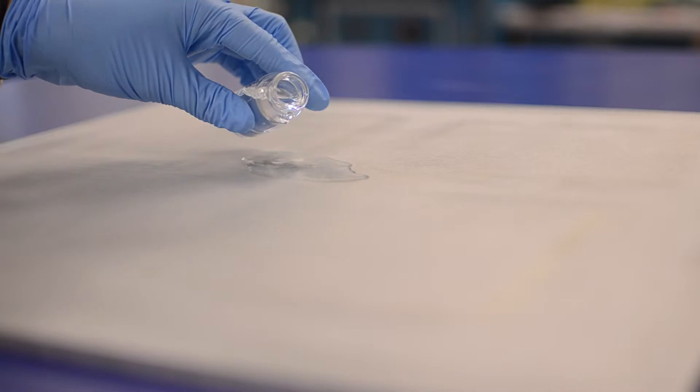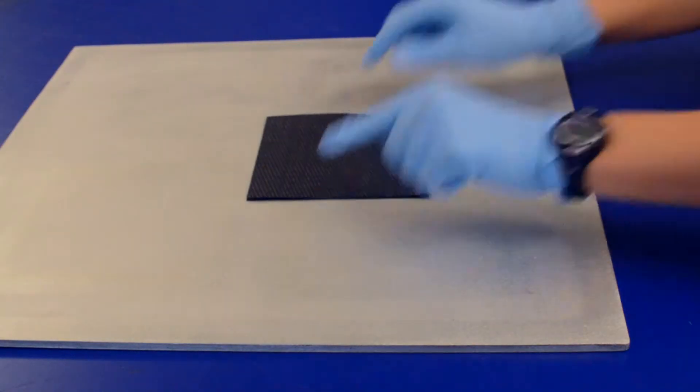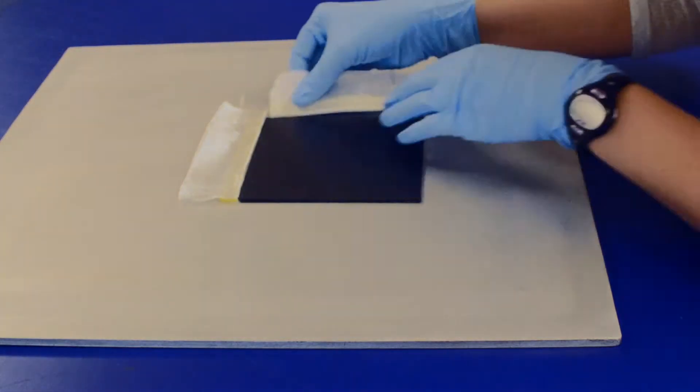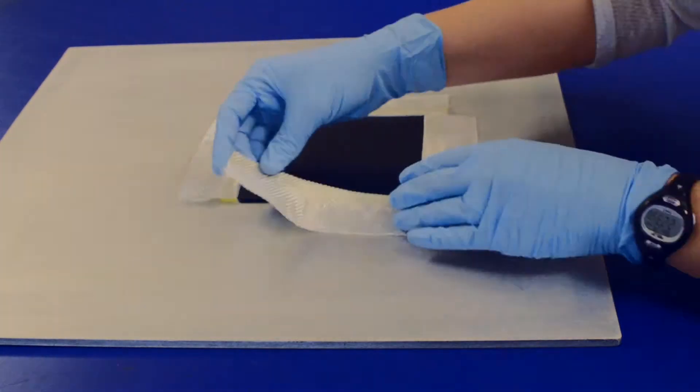First, a release agent is applied to the tool plate to prevent the composite from adhering to the tool during cure. Next, prepreg plies are stacked up and edge breather is placed around the edges to allow air evacuation during cure.